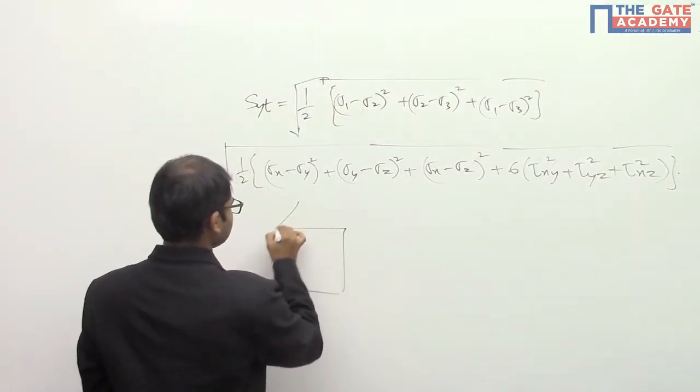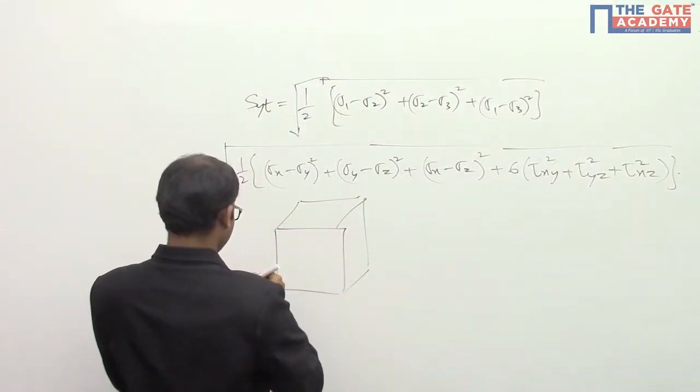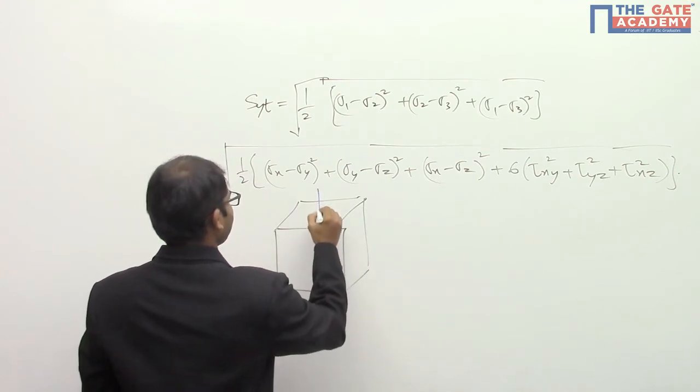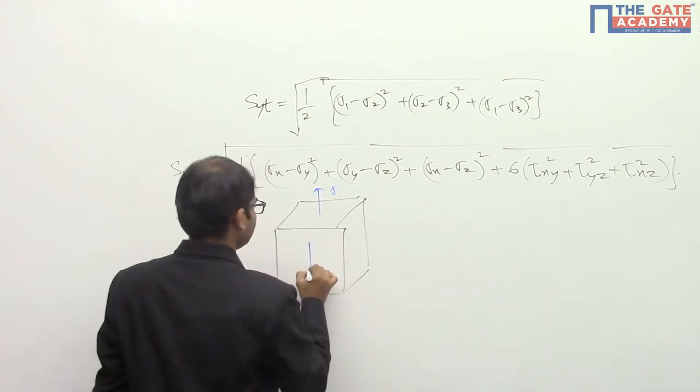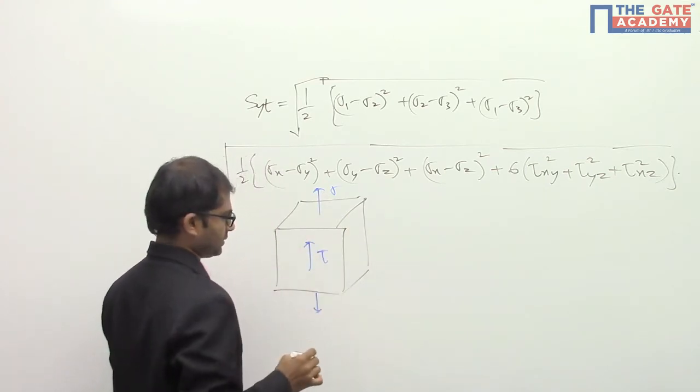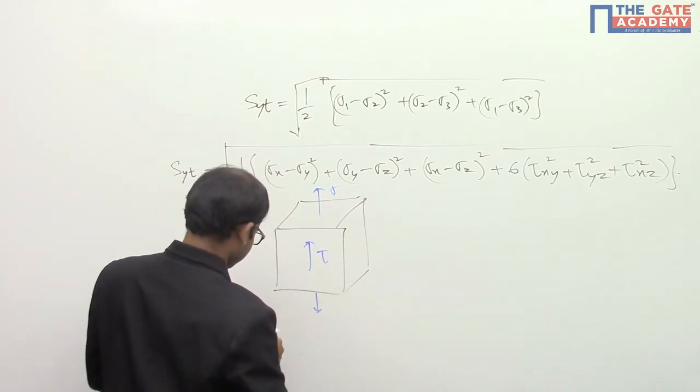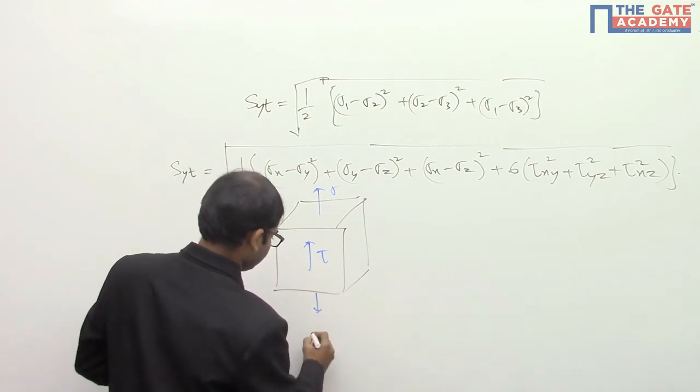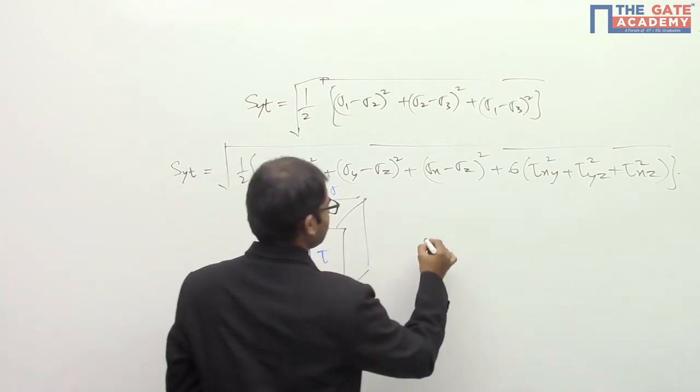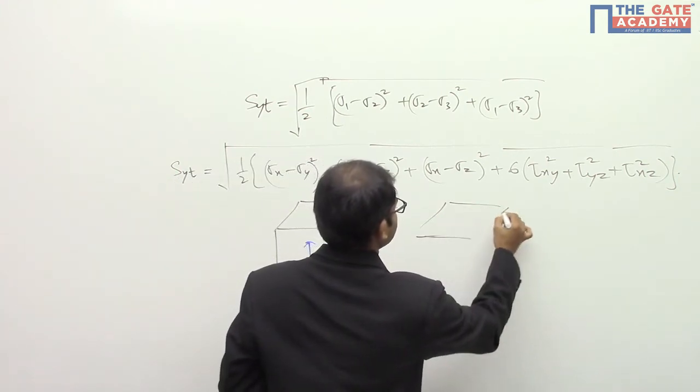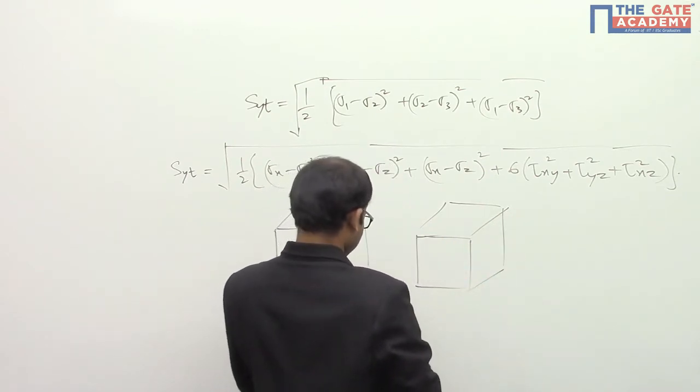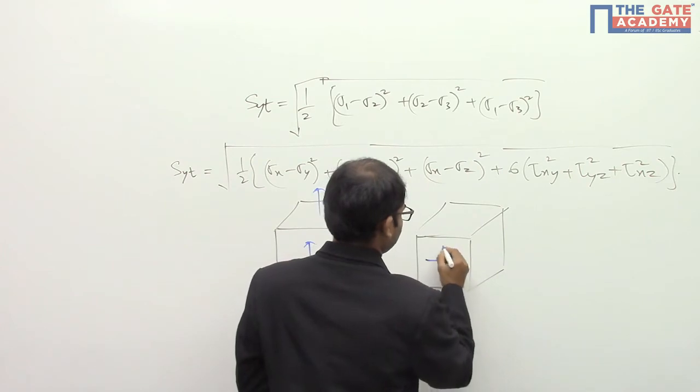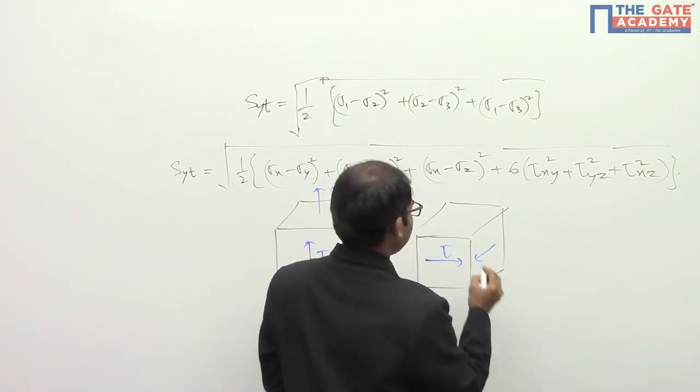The first loading case is like this, having sigma in only the y direction and we have the value of tau like this. This is the first case. If you take the second case, it is tau in this way and this is sigma. This is the second loading case.